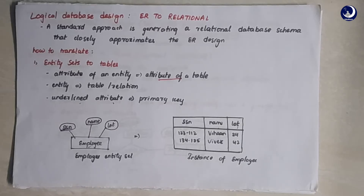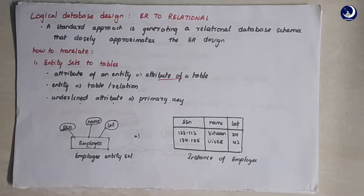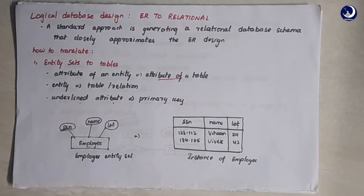Once we have a database described in terms of an ER model, the standard approach is generating a relational database schema that closely approximates the ER design. We should be able to define the relational database schema for creation of a collection of tables. I'm going to teach you the transformation of entity sets into tables, relationship sets into tables — both with and without constraints — separately so you can understand it better.